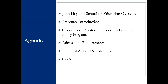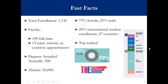I'd like to share the agenda for today's virtual information session. We'll kick off the presentation with an overview of the Johns Hopkins School of Education. Then Dr. Kramer will go over the details of the education policy program. I'll wrap it up with admissions requirements, financial aid, and scholarships, and leave the floor for questions at the end. We are one of nine schools at Johns Hopkins University, and we're proud to share that the Johns Hopkins School of Education is consistently ranked one of the top schools in education by the U.S. News and World Report.